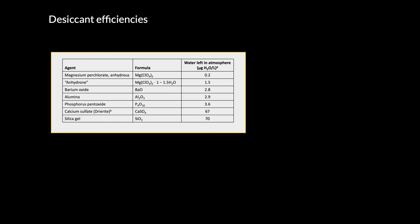But if we wanted to reduce the water level to a very small amount, we'd have to use a more aggressive desiccant. For instance, phosphorus pentoxide would reduce the humidity in the air down to 3.6 micrograms per liter, and all the way down to something like anhydrous magnesium perchlorate, which would reduce it to a very low level.